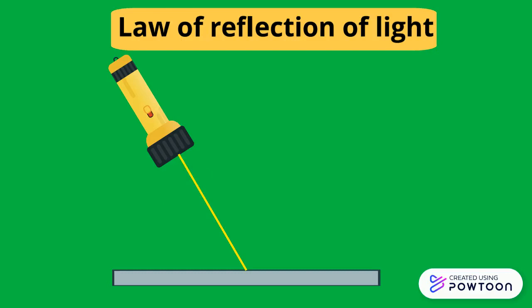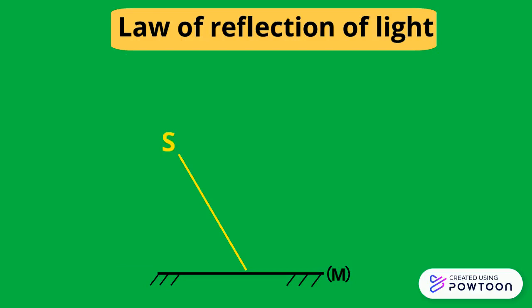The symbolic representation of the mirror is shown. The ray that falls on the mirror from the source S is called the incident ray. The point of intersection between the incident ray and the plane mirror is called the point of incidence I. So the incident ray is SI.